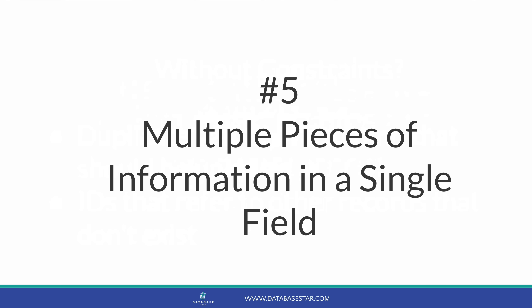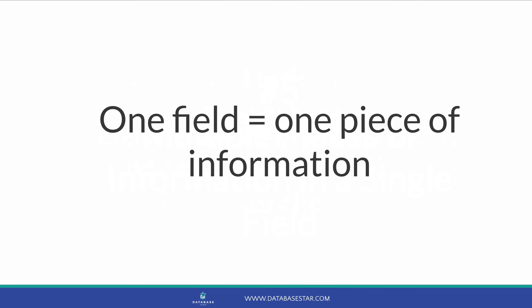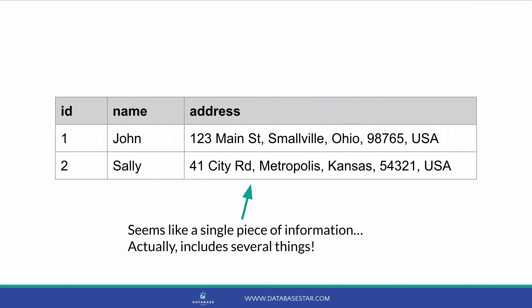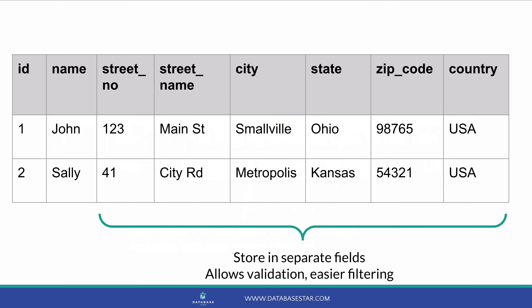Mistake number five is storing multiple pieces of information in a single field. One field should store one piece of information, though it's not always clear what that means. A common example is an address field. An address may seem like a single piece of information, but it actually includes a street number, street name and type, city, state, country, and zip or postal code. It's usually beneficial to store these as separate fields rather than a single large text field, allowing validation on individual components and filtering by city without string manipulation.